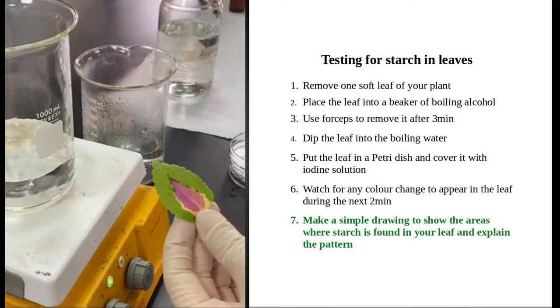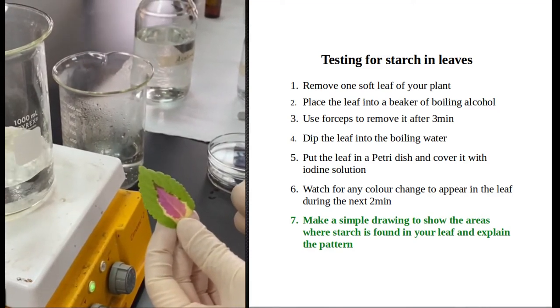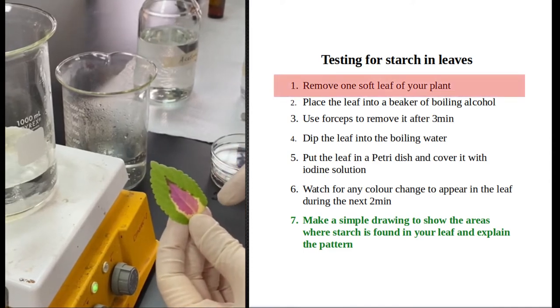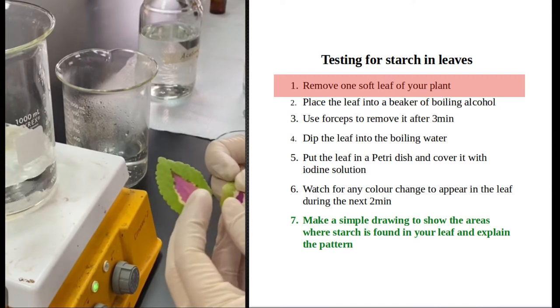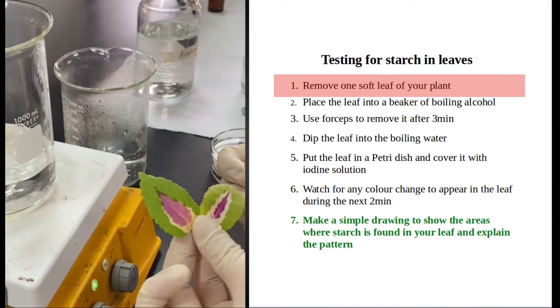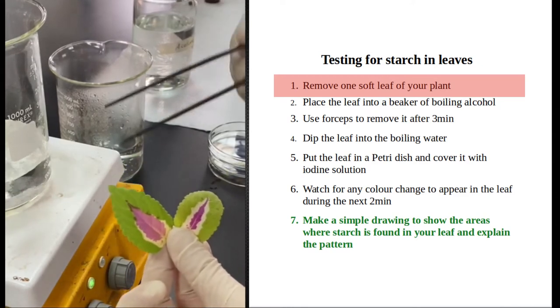In this experiment we will demonstrate the importance of chlorophyll in photosynthesis. When the leaf undergoes photosynthesis, it will produce carbohydrates and store them as starch. Photosynthesis requires carbon dioxide, light, and chlorophyll.